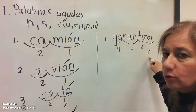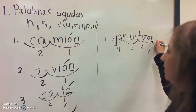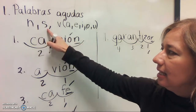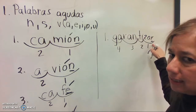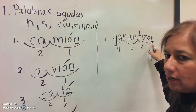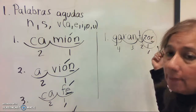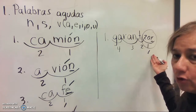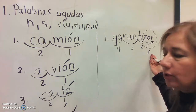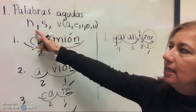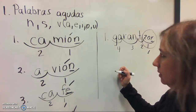We are going to decide if it's going to have an accent or not. Does it end in N, S, or a vowel? No, it doesn't end in N, S, or a vowel. So even though this is una palabra aguda because the stress is on the last syllable, you're not going to write the accent because it does not end in N, S, or a vowel.